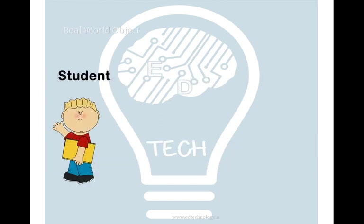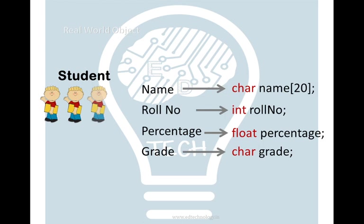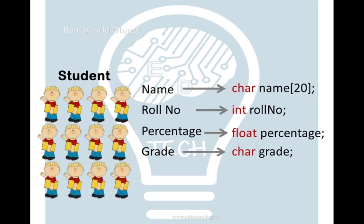So what do we do if in case we want the name, role number, percentage, grade for each student? Because that's how the real world problems are. That's how the real world objects are. We want to store similar data and have one variable storing the name, role number, percentage, grade, or even any other data for that particular student.